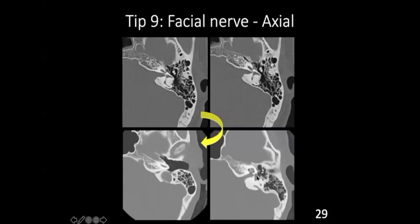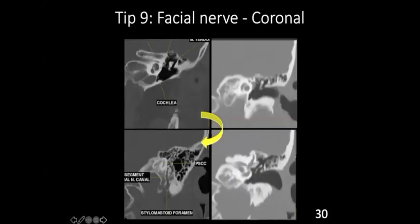To identify the second genu and vertical part, look at the cochlea and the vestibule. Here you can see the oval window and the stapes. Look posteriorly and lateral to the vestibule — there will be a space there, which is the sinus tympani. At a lower level, we can see the jugular bulb, and lateral to it, the facial nerve running downwards. At that same level, the last basal turn of the cochlea will also be seen.